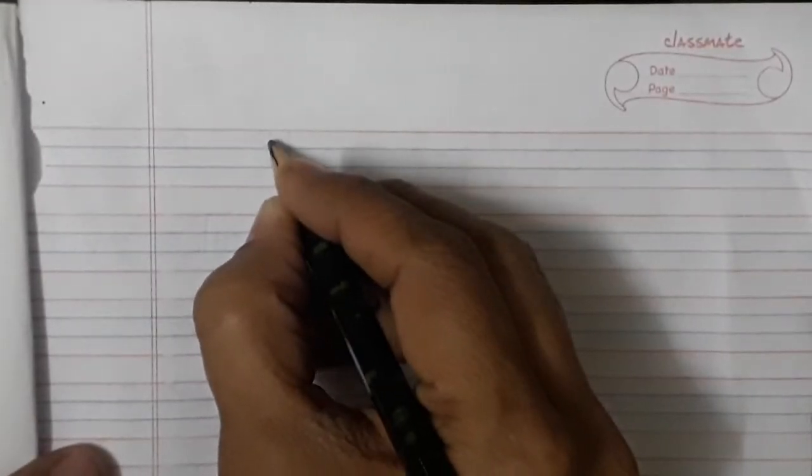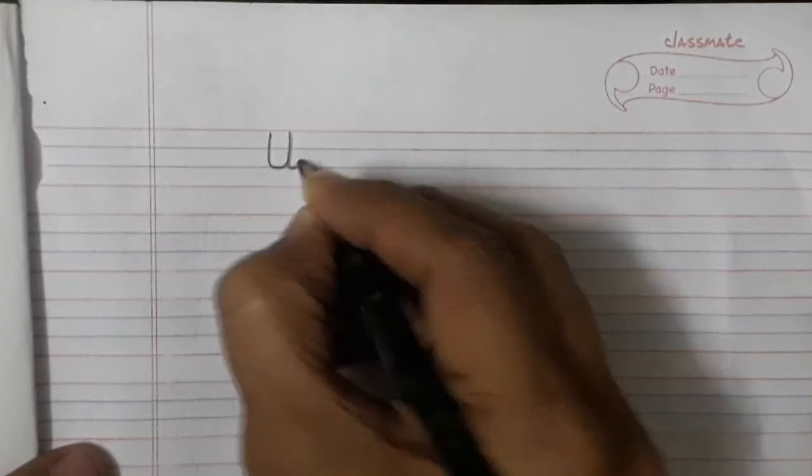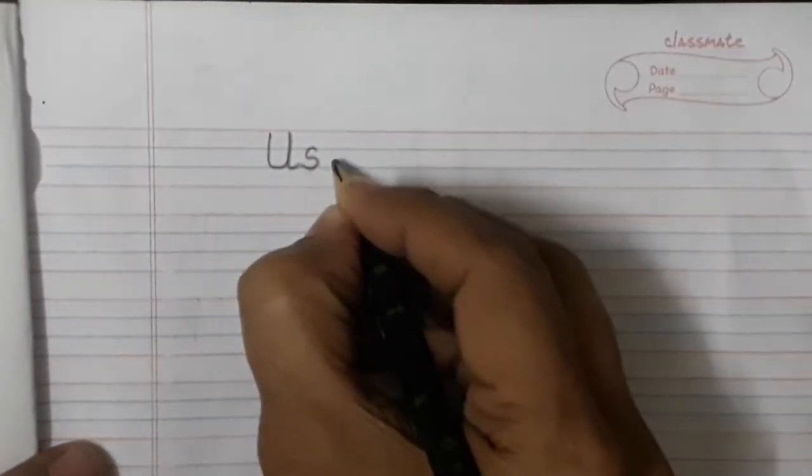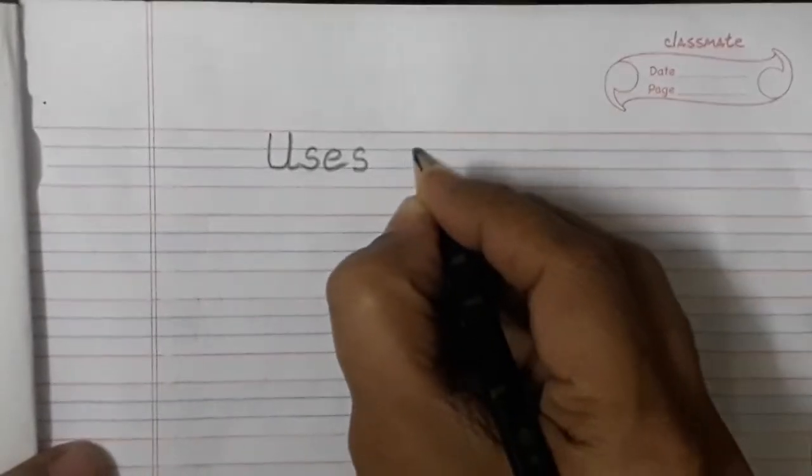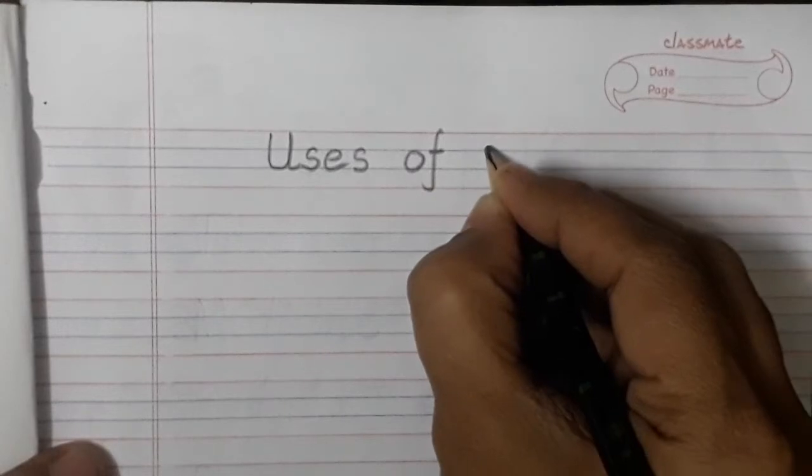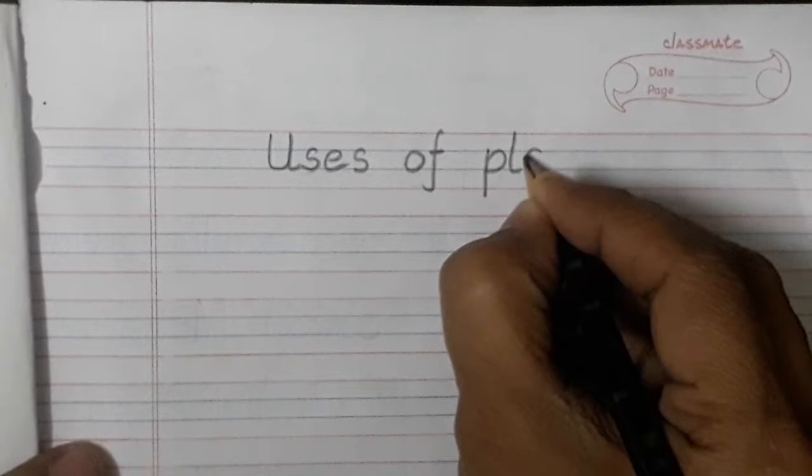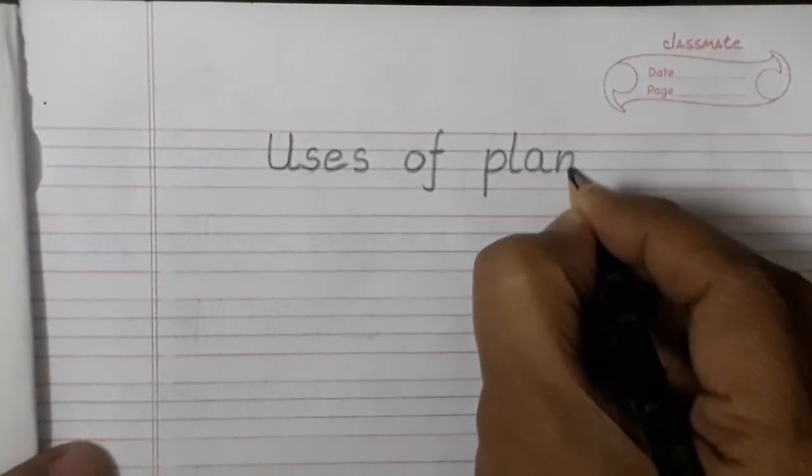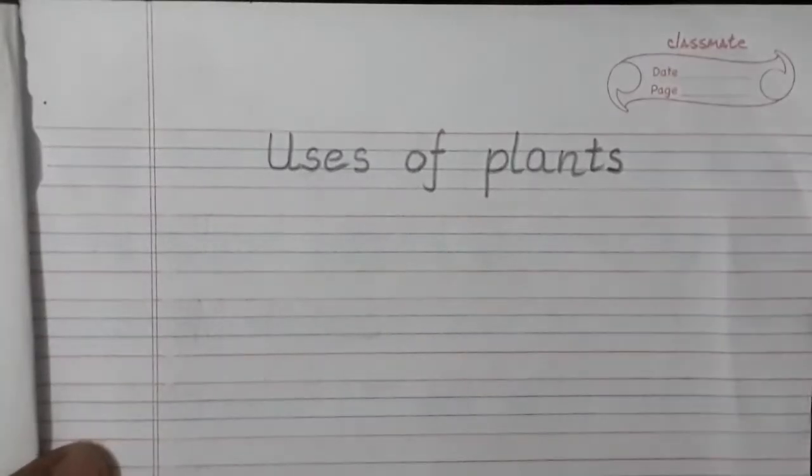Now let's write heading uses of plants. So here, we will write the spelling of uses, uses of plants. Write the spelling of plants, P-L-A-N-T-S, uses of plants.